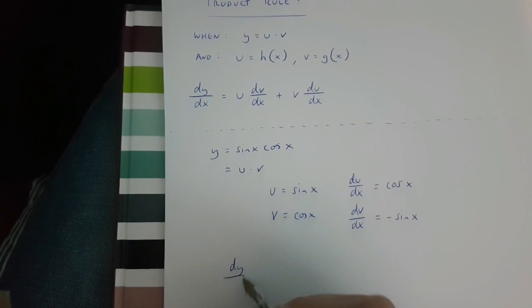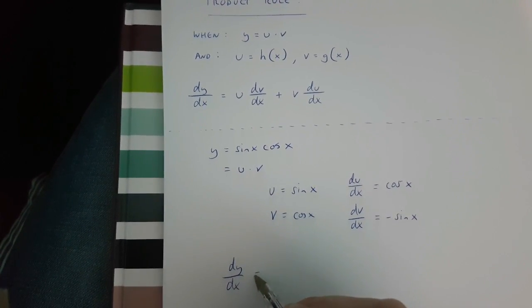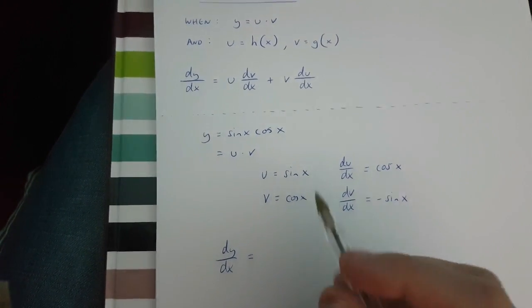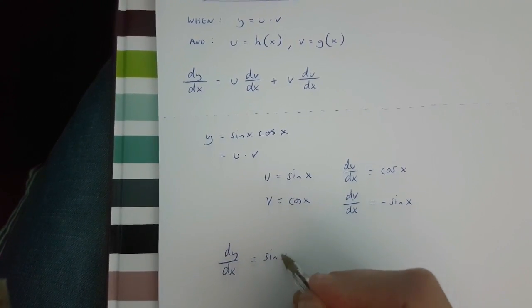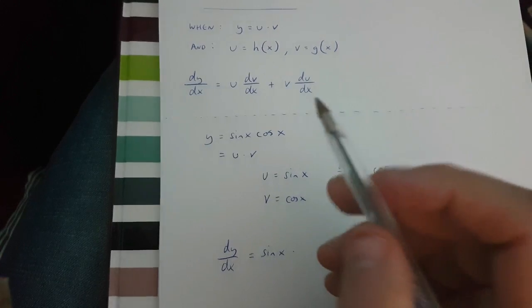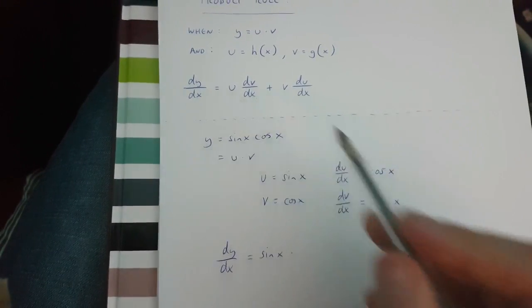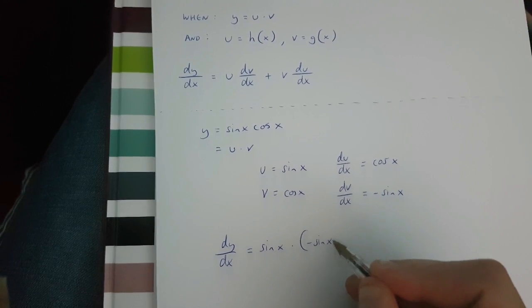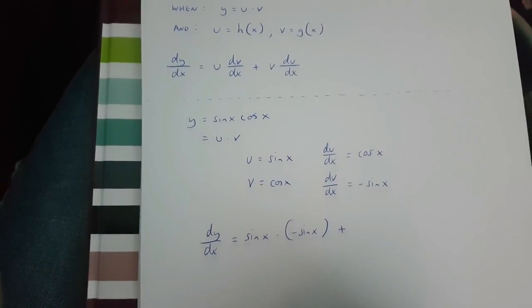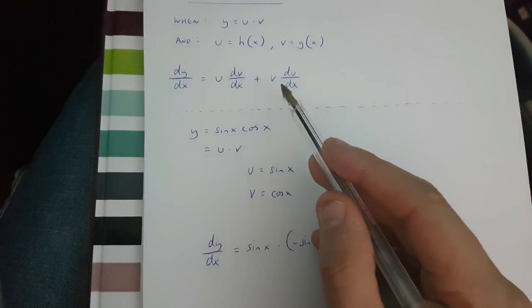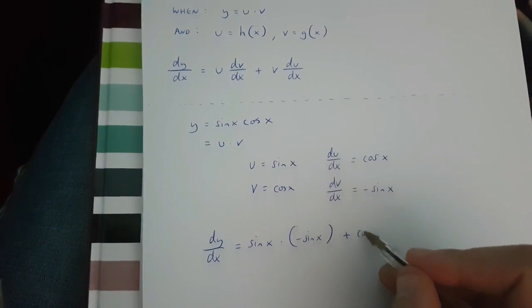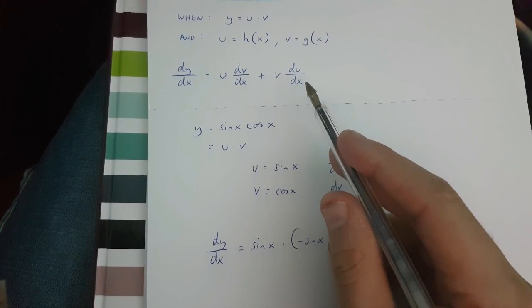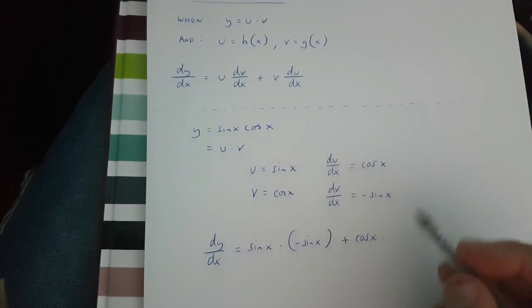So, dy over dx is going to be equal to u, which is sine x, times dv over dx, which is minus sine x, plus v, which is cos x, times dv over dx, which is cos x.